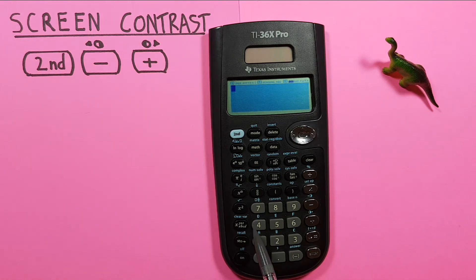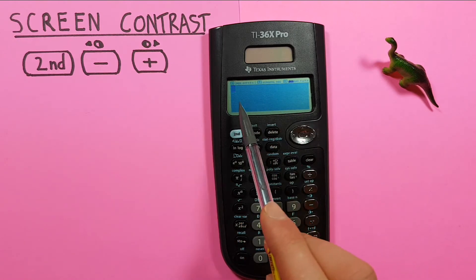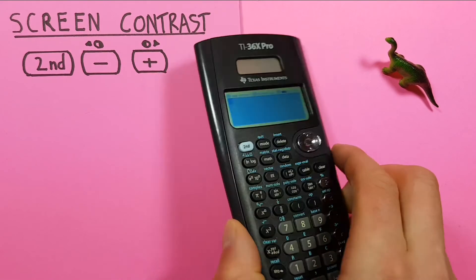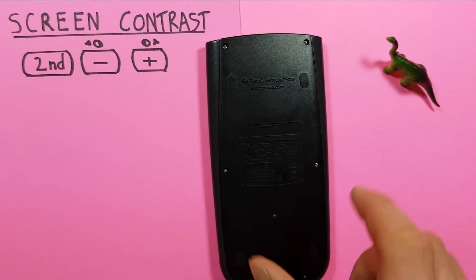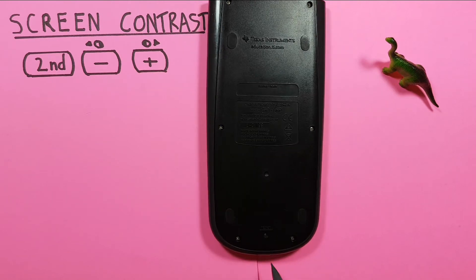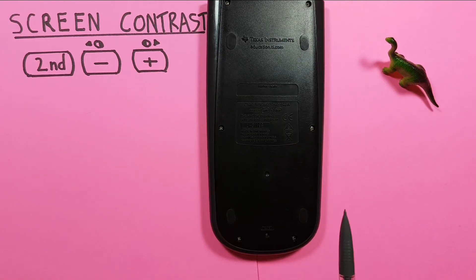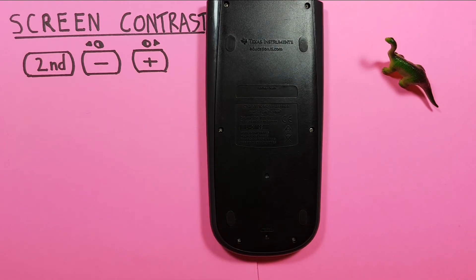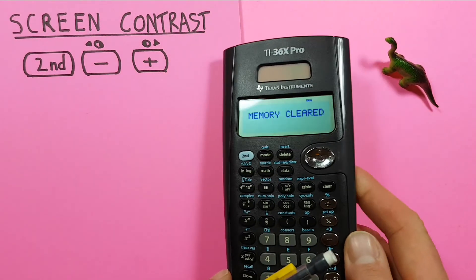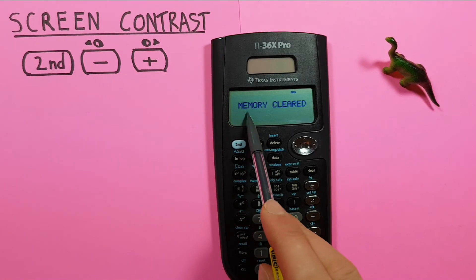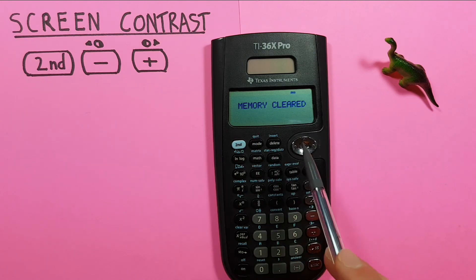Be aware that doing this will reset any saved variables and any modes you have your calculator set to. To do this, you want to turn over the calculator, and at the bottom you should see a small button that says reset, right here. Then you want to take a small pointed object, like a pencil or a pin, push that button in, and then release. When you turn the calculator back over, it should say memory clear, and you'll notice your contrast has returned.